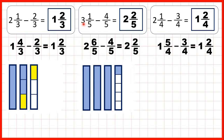Then we started with three wholes and one-fifth, but we needed to take four-fifths away, so we changed one of our wholes into fifths. That meant we had two wholes and six-fifths, so we could take away four-fifths, and that meant we were left with two wholes and two-fifths in blue, so that was our answer.